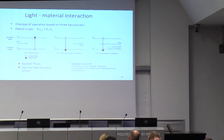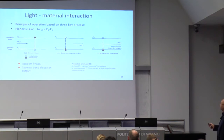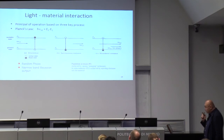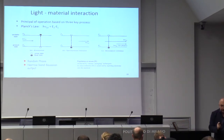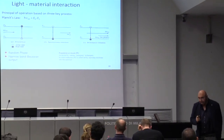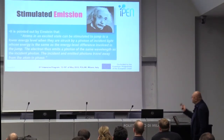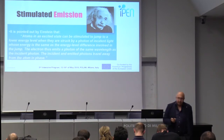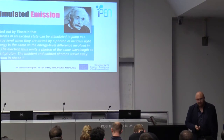The third process is stimulated emission. When an electron is at the excited state and a photon with the proper energy arrives, the photon triggers the transition of the electron from the higher to the lower level, and we get two photons with exactly the same energy and exactly the same phase. This process — stimulated emission — is fundamental to the laser: Light Amplification by Stimulated Emission of Radiation.